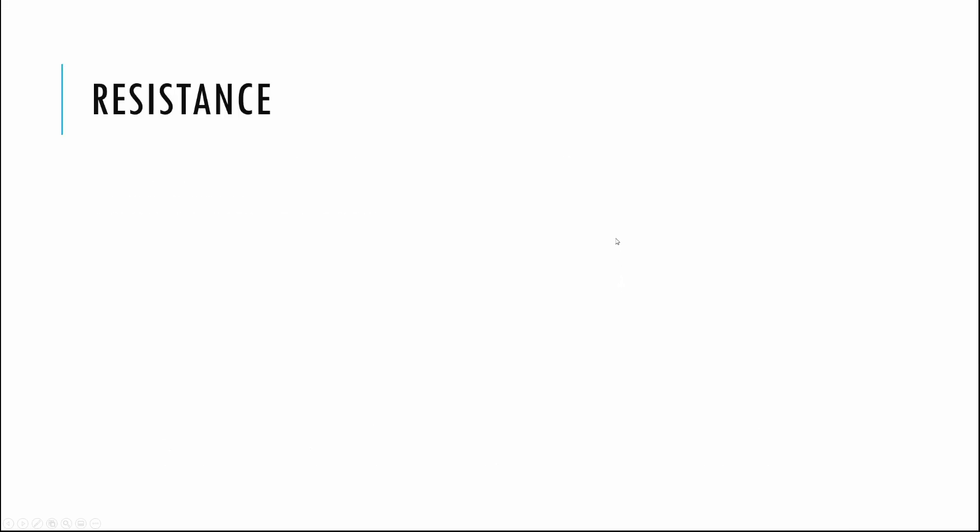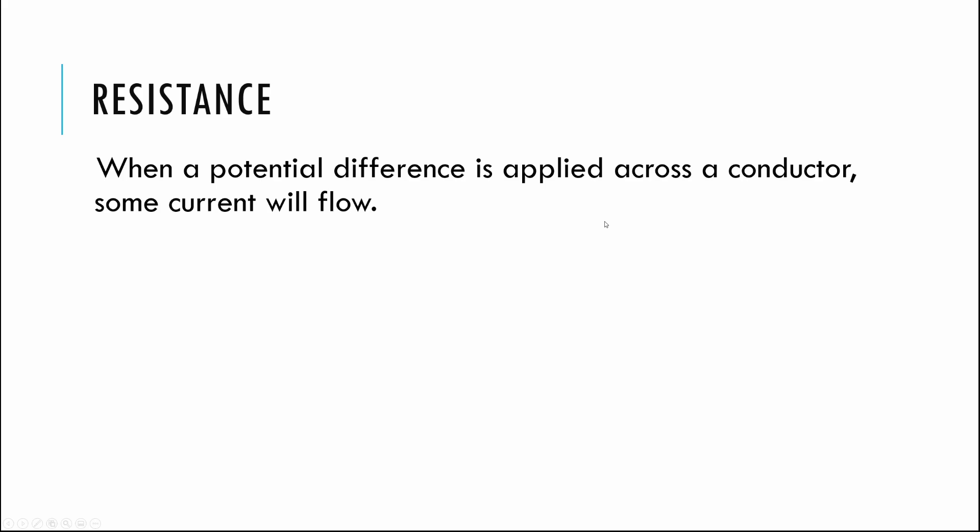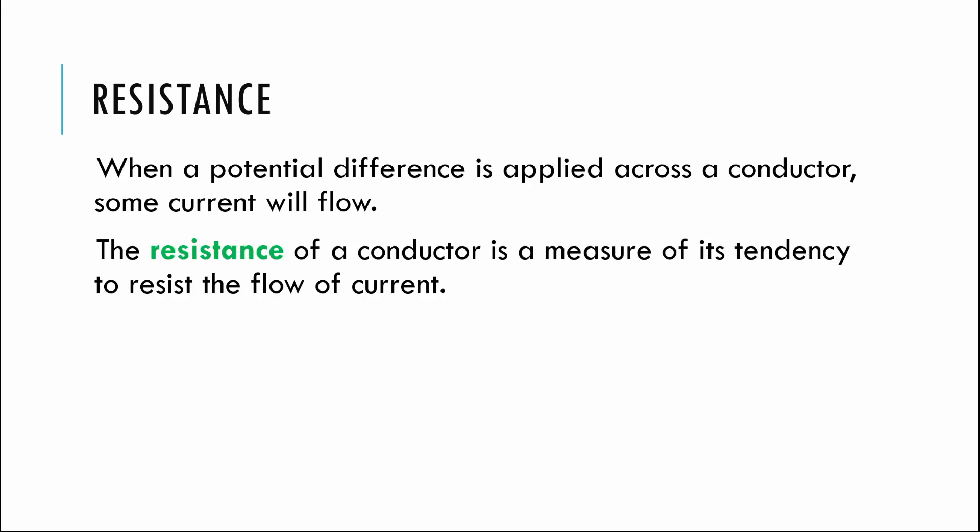What is resistance? When you apply a voltage to a conductor — run current through a wire, a light bulb, anything that will carry current — we know we're going to get current to flow; a voltage causes current to flow. However, what will happen depends on what material the current is flowing through. Every conductor, everything that conducts electricity, has what's called a resistance. Resistance is generally a way to measure how a material will tend to resist the flow of current.